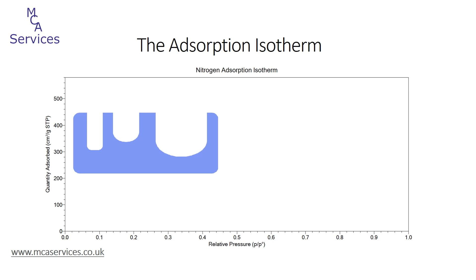Since this is the start of the analysis, there's no data on the isotherm plot yet. Instead, the sample is being held under vacuum, waiting for gas to be admitted to the analysis tube — in this case nitrogen.